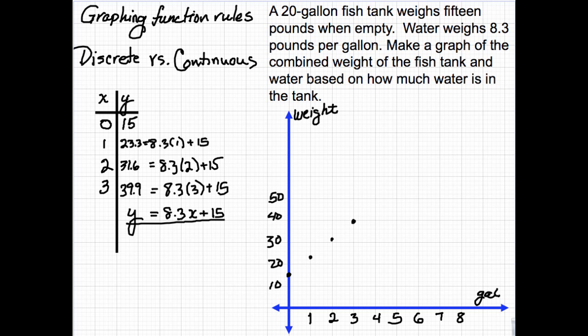So we plotted the four points, and now we ask, should we draw a line? Well, does water come just in increments of one gallon? Like, can you only put exactly one gallon or exactly two gallons or exactly three gallons in the tank? And no. You can put any amount of water in. It could be half a gallon. It could be two and a third gallon. It could be eight and five-sevenths gallons. So any amount of water could be in there, and the tank plus the water could have any weight that's between 15 and whatever corresponds to the amount of water that's in the tank.